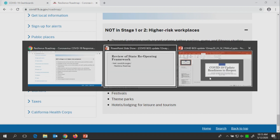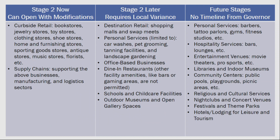There was information on that website released Thursday that was new to Stanislaus County — things we had some local control on were included or restricted without informing local communities. For the very first time, we were informed that some of our own public health orders may be at odds with the state public health order. Stage 2 now allows curbside retail and supporting supply chain with modifications. We're happy to have that, and businesses that can adapt to curbside should do so — please call 211 if you need assistance from our business support team.